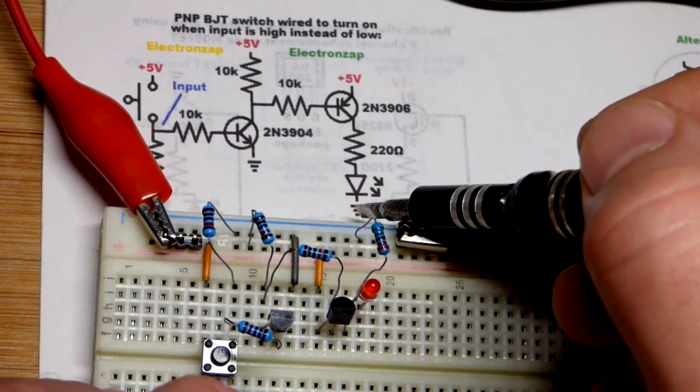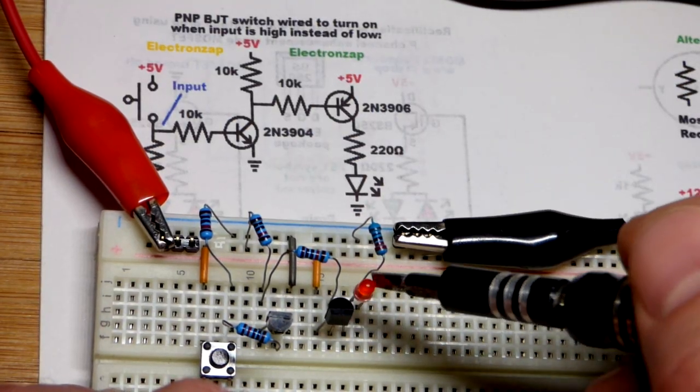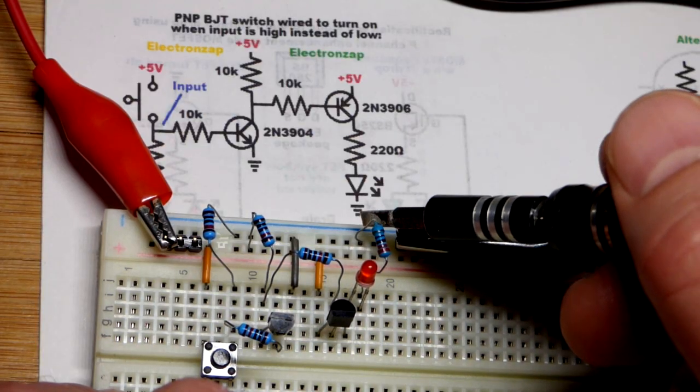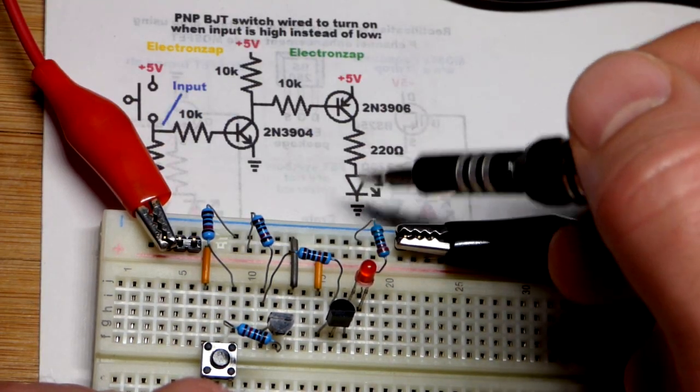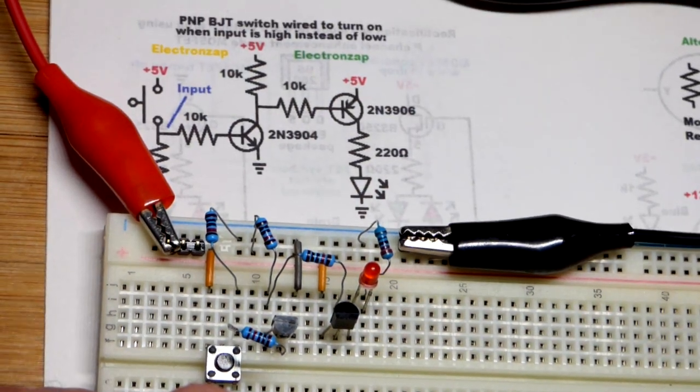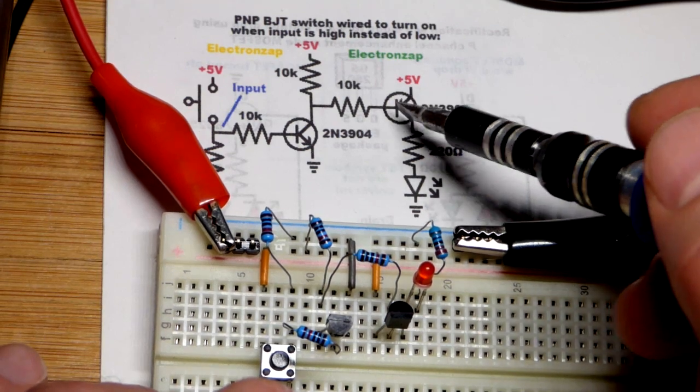When the PNP transistor turns on, it turns on the load. We have the red LED - make sure you put it in the right way, cathode to the negative supply through a 220 ohm resistor. The pull-up resistor holds the PNP transistor off.